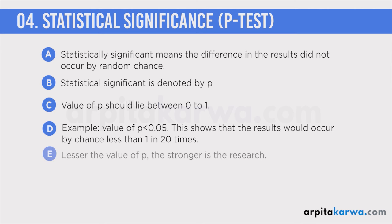So the probability of the result being a fluke is less than 1 in 20 times, meaning the research is really strong. If the P-test value is 0.001, that means it can only happen 1 in 1000 times that the result happened by chance. So the lesser the value of P, the stronger the research is. If the value of P goes beyond 1, then in that case we can simply reject the experiment or research.